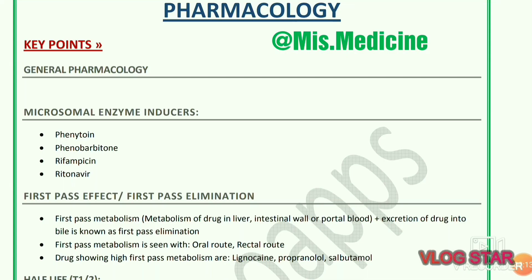This is a quick review of pharmacology. Microsomal enzyme inducers are phenytoin, phenobarbitone, rifampicin, and ritonavir. First pass effect, or first pass elimination, is the metabolism of a drug in the liver, intestinal wall, or portal blood, plus excretion of drug into bile. First pass metabolism is seen with oral and rectal routes. Drugs showing high first pass metabolism include lignocaine, propranolol, and salbutamol.